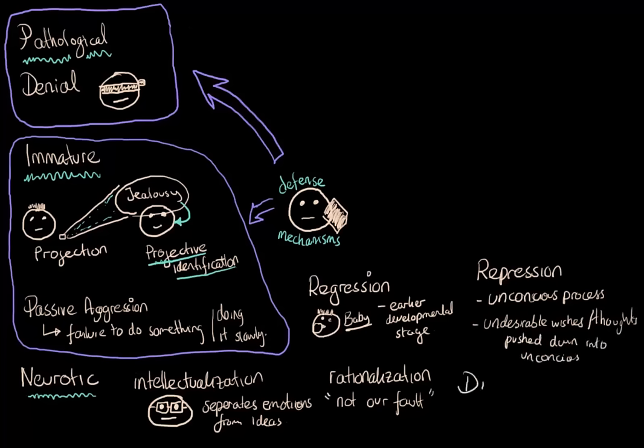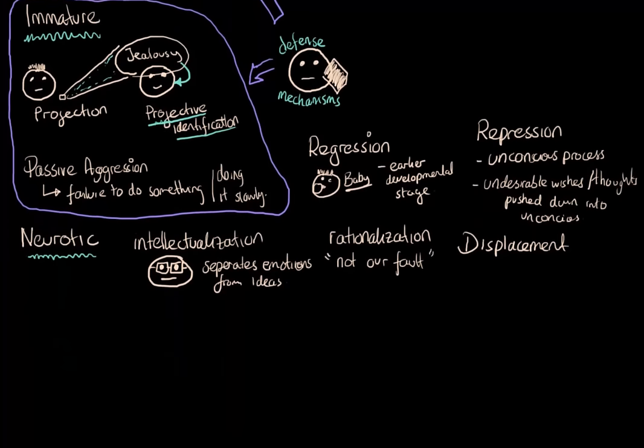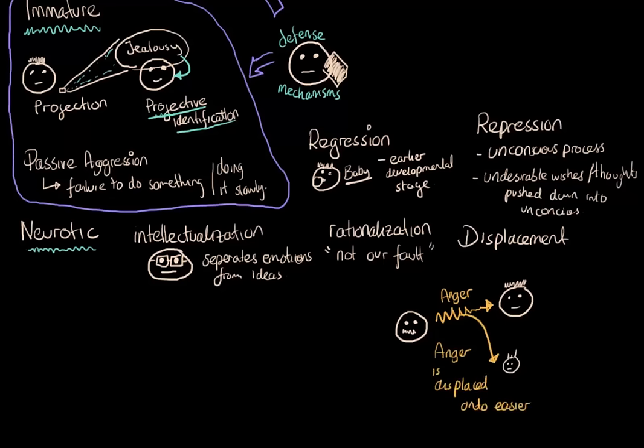Finally, in this category, we have something called displacement. I'm actually going to go down a little bit just to show you what that looks like. What can happen in displacement is that an individual may feel very angry towards one person. But because it's not safe or it may be difficult to express that anger, they may displace that anger onto an easier target. For example, if a wife is angry at her husband, instead of shouting or getting angry at him, she may actually get angry at her child.